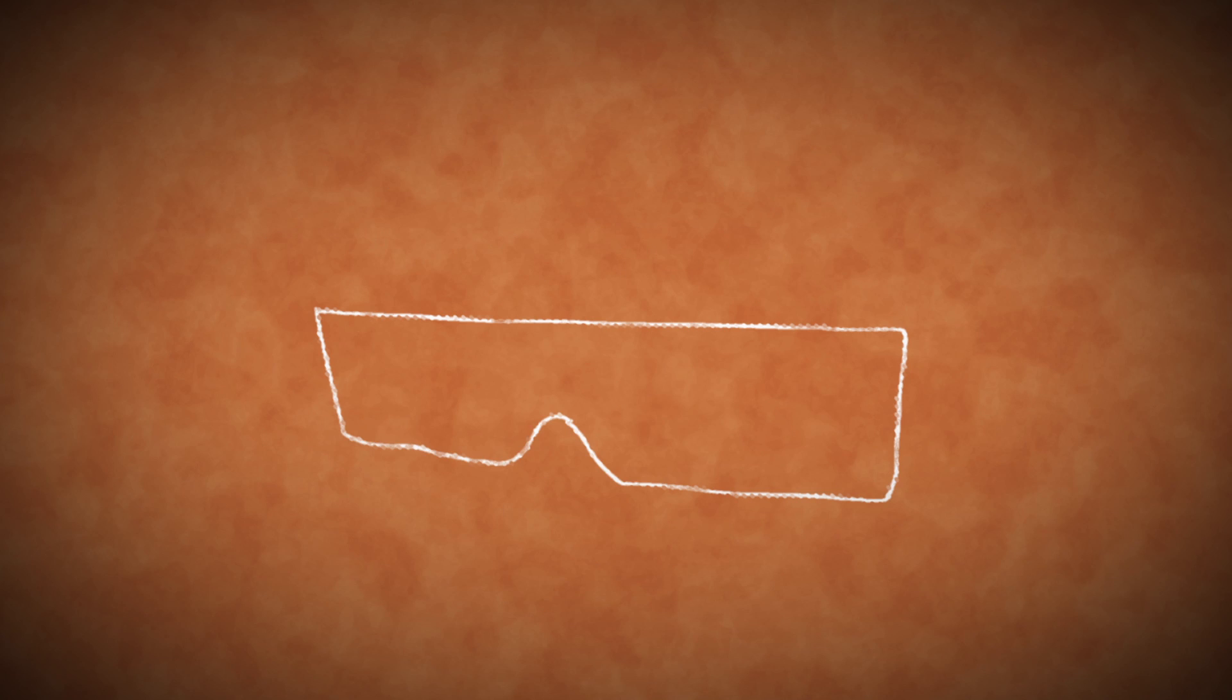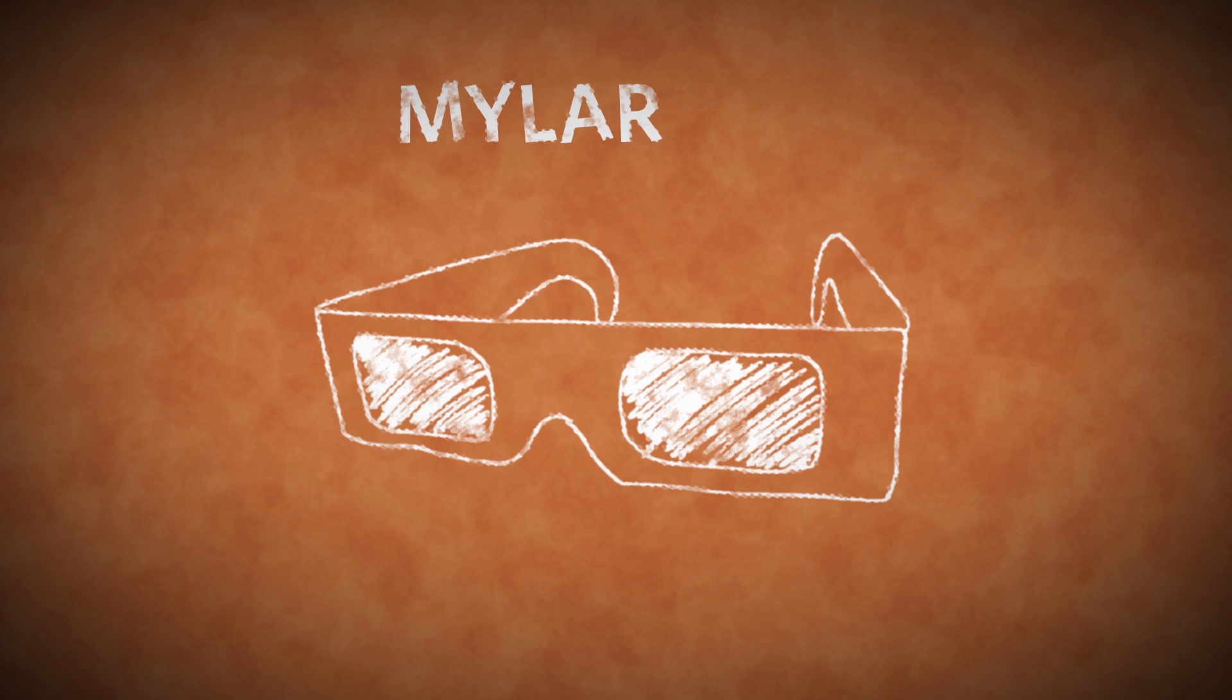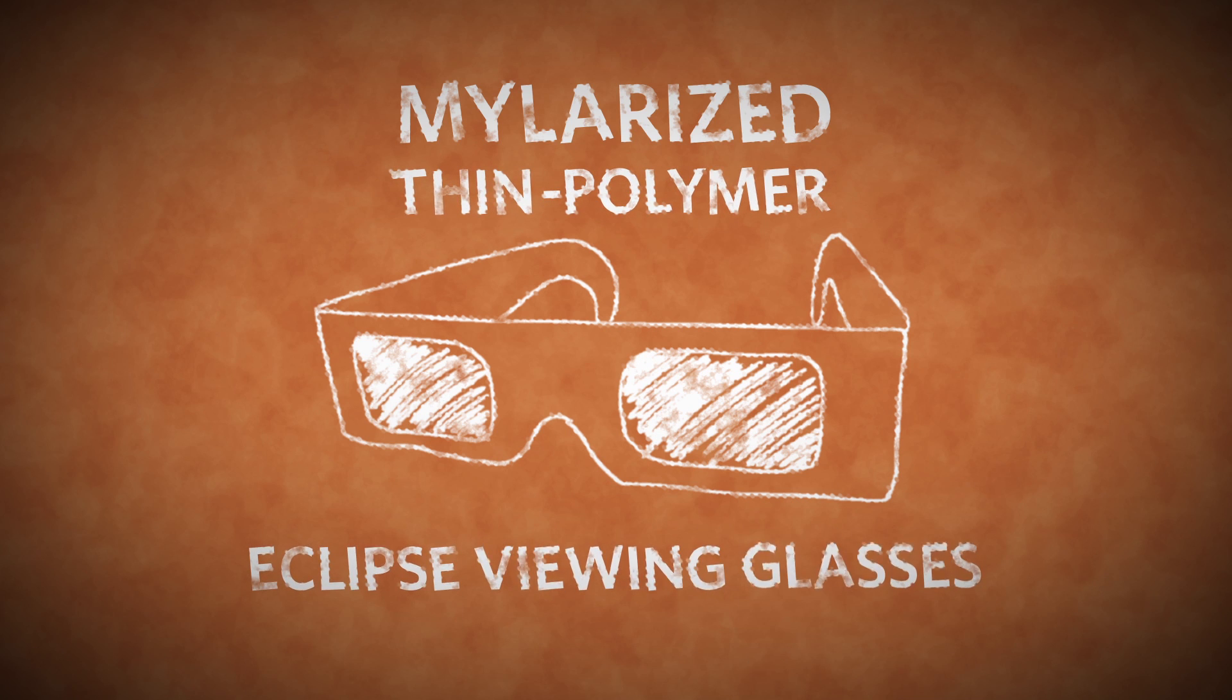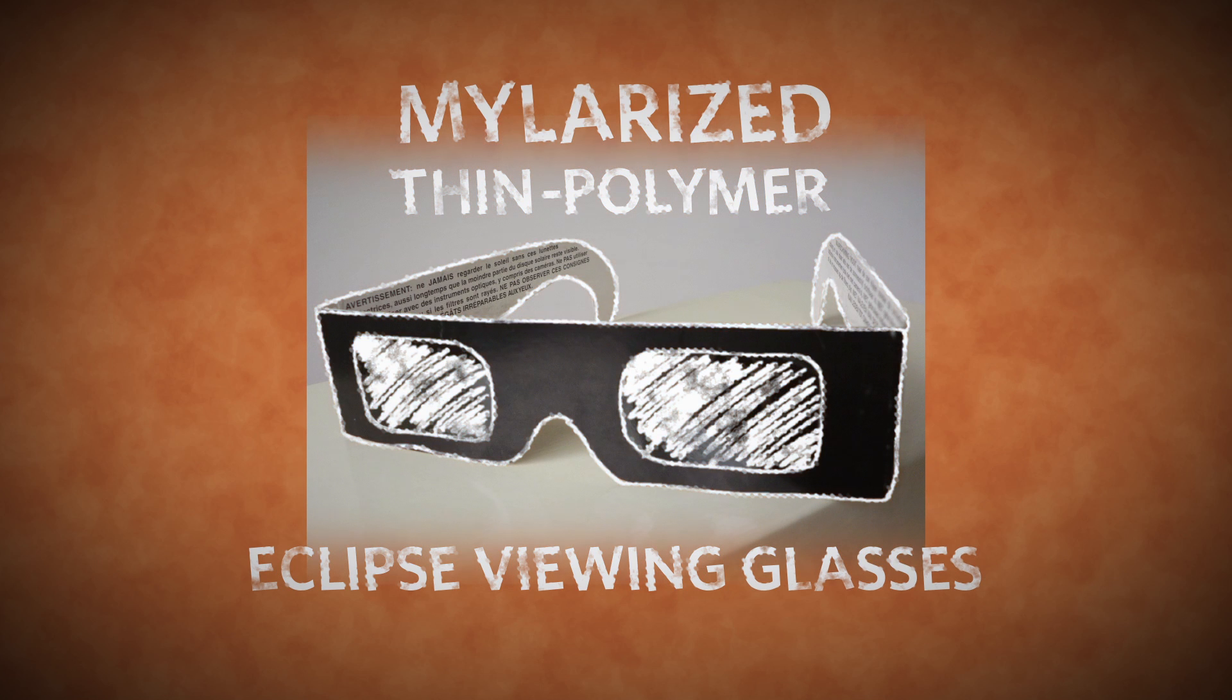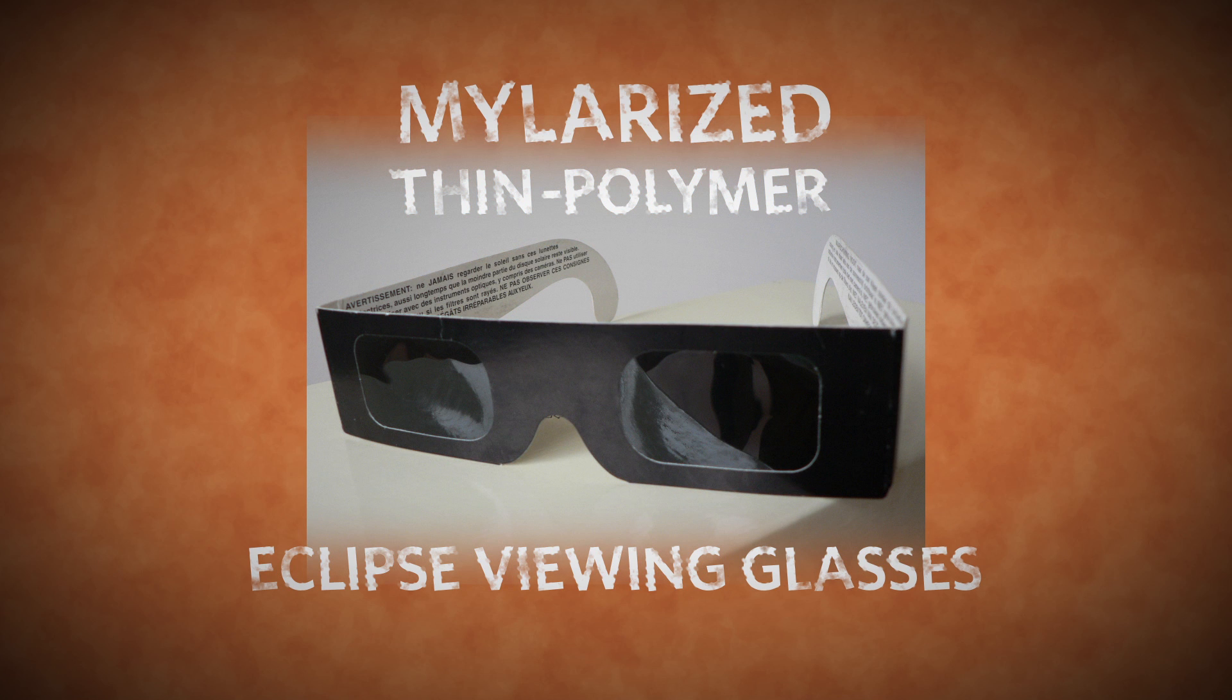Proper filters are specifically designed for observing the sun. The best options include mylar or thin polymer eclipse-viewing glasses, but make sure that they're in good condition, with no wrinkles or pinholes.